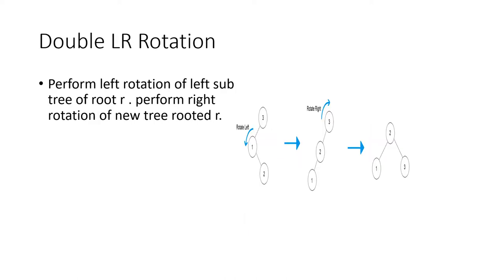Next is double LR rotation, where LR is left to right rotation. First perform left rotation of the left subtree of root R, and then perform right rotation of the new tree rooted at R. Here is the example. First rotate left, then it will be 3, 2, and 1. Next rotate right, it will be 2, 1, and 3. Here 2 is the root node and 1 and 3 are the leaf nodes, and the balance factors of 2, 1, 3 are 0.